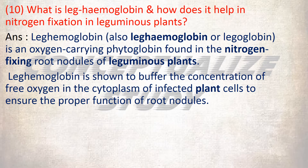What is leghemoglobin and how does it help in nitrogen fixation in leguminous plants? Leghemoglobin, also called legoglobin, is an oxygen-carrying phytoglobin found in the nitrogen-fixing root nodules of leguminous plants. Leghemoglobin is shown to buffer the concentration of free oxygen in the cytoplasm of infected plant cells to ensure the proper function of root nodules.